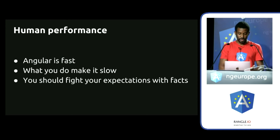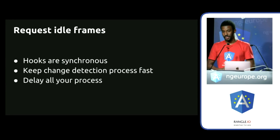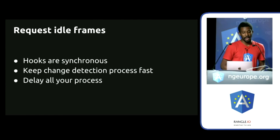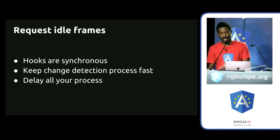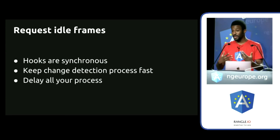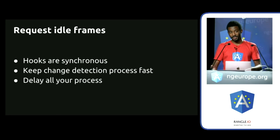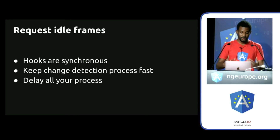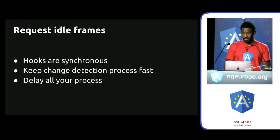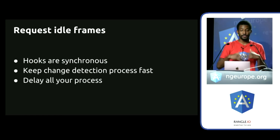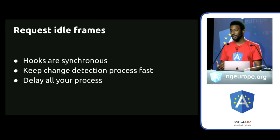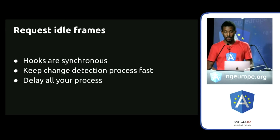To make the dev tool, I use a lot of requestAnimationFrame, and I use the hooks to trigger my requests for idle frames, and use the idle frames to process data, and then use the idle frame to ask for an animation so D3 can do something. I always try to preserve the change detection so it's like a kind of communication and rendering pipeline. Anything else I try to put outside the change detection process so Angular is always fast.